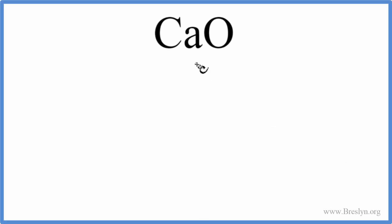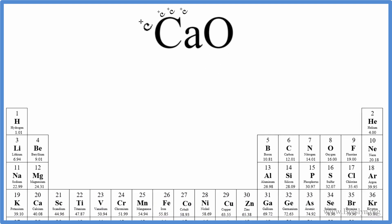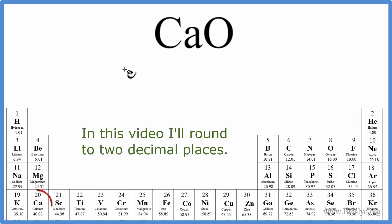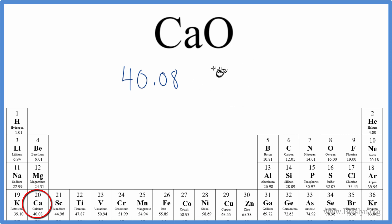To find the molar mass for calcium oxide, that's CaO, we'll go to the periodic table. We look up calcium, and its mass is 40.08 — that's grams per mole, but we won't write that till the end.